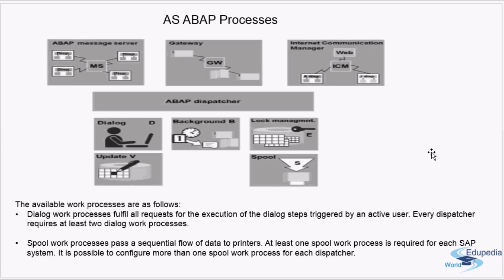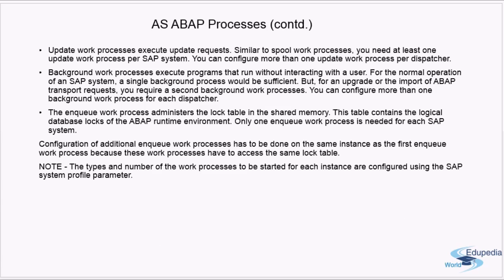More than one spool work process can be configured, and generally the spool work process is configured on the primary application server. An update work process executes update requests. Similar to the spool work process, you need at least one update work process per SAP system, and you can configure more than one update work process per dispatcher. Update work processes handle database update requests.